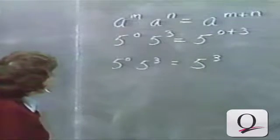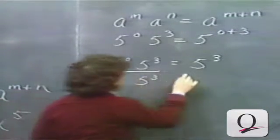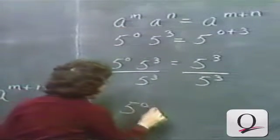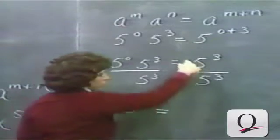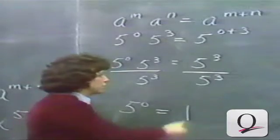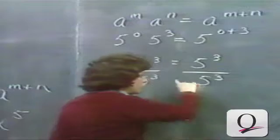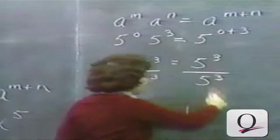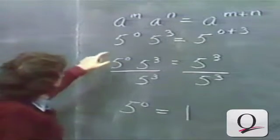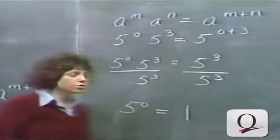We have an equation here. We can divide both sides by 5 to the 3rd power, and we get that 5 to the 0 should logically be defined to be equal to 5 to the 3rd power over 5 to the 3rd power, which of course equals 1. 5 to the 3rd power is 125; it's 5 times 5 times 5 divided by 5 times 5 times 5, so the answer is 1. For the first rule of exponents to make sense for zero exponents, it appears that 5 to the 0 equals 1.